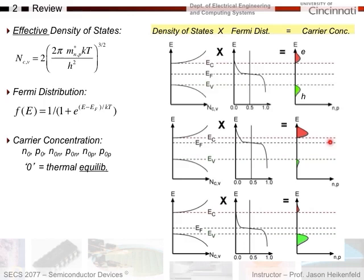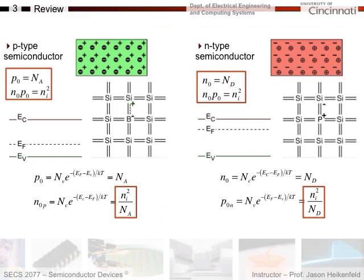For p-type material, doping adds more holes, which kills off electrons, and the Fermi level shifts in the opposite direction. In a block of p-type material, the positive symbols are mobile holes — an absence of an electron traded back and forth between silicon atoms — while the boron dopant atoms are negatively charged, stuck in place. The number of holes equals the number of boron atoms, since doping levels are orders of magnitude greater than thermally generated concentrations.